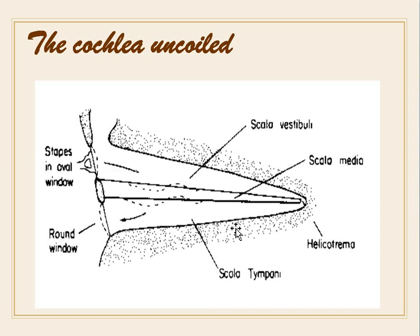Here you can see the stapes footplate lying over the oval window and the scala vestibuli. Sound coming from the outer ear travels through the middle ear to the inner ear through the stapes footplate. Sound waves travel from the external ear to the middle ear, the ossicles move, and then the sound is transmitted to the inner ear causing movement of the fluid inside.